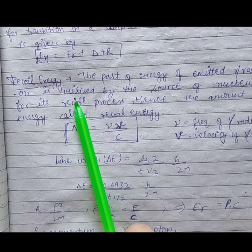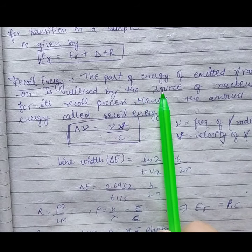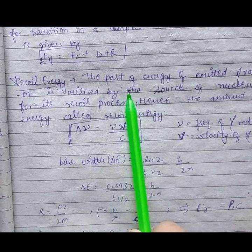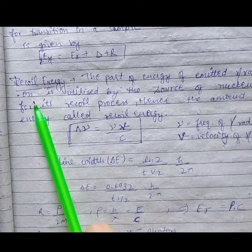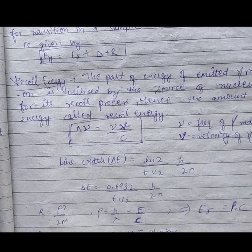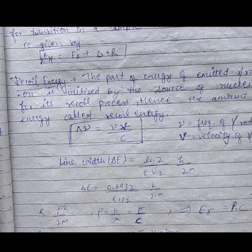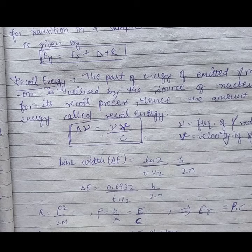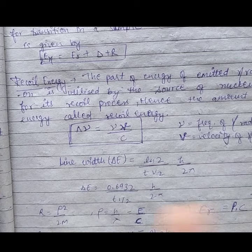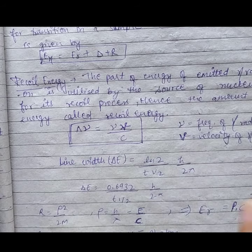Recoil energy: The part of energy of emitted gamma radiation is utilized by the source nucleus for its recoil process. So all the energy that is emitted, from that, some energy that the nucleus has, it uses in its recoil process. This process is called recoil energy.